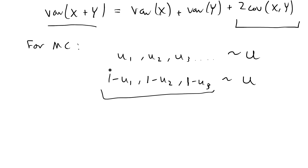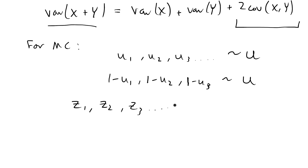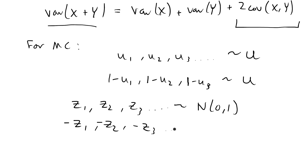So u1 would have a negative covariance with 1 minus u1. Another special case: if you are sampling z1, z2, z3, etc. from the standard normal distribution, the antithetic variate would be negative z1, negative z2, negative z3, etc. That is also distributed standard normal N(0,1), and the covariance between z1 and negative z1 would be negative.